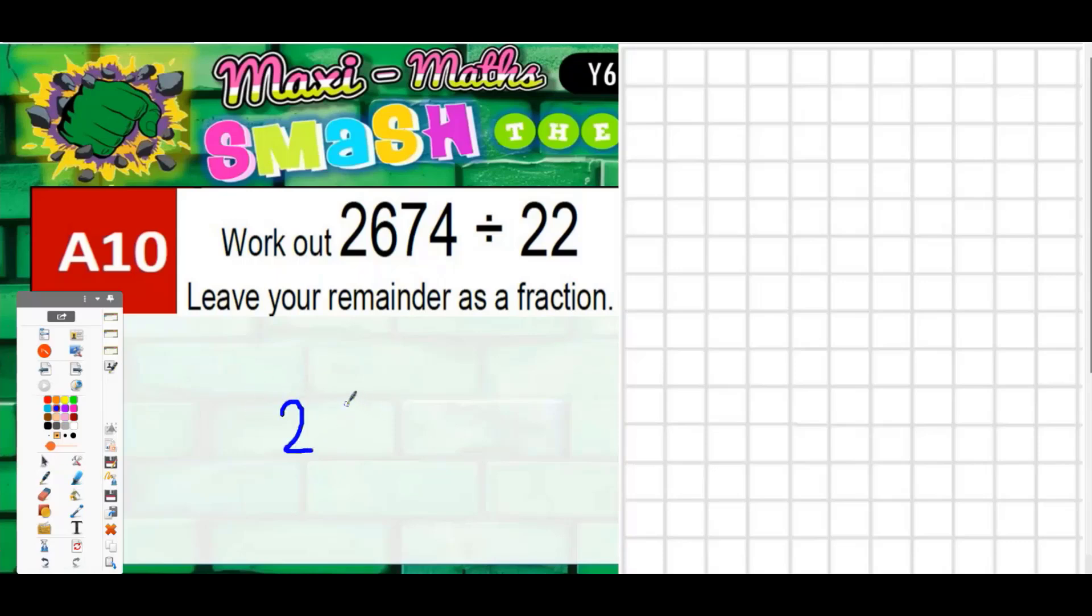So we'll go for the short method first - it's 2674 divided by 22. Now if you're going for the short method what I suggest you do is write some multiples of 22 underneath. So 1×22 is 22, add another 22 is 44, another 22 is 66, another 22 is 88.